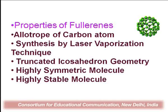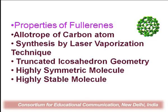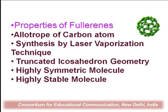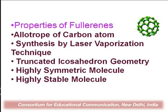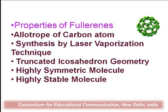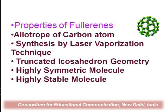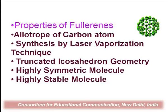What are the different properties of fullerenes? As we know, it is an allotrope of carbon and the most prominent allotrope of carbon, which exists in three dimensions — 0, 1, 2, and 3. Carbon is a very unique element in the periodic table whose allotropes span three dimensions (0, 1, 2, 3). It is synthesized by the laser vaporization technique and has truncated icosahedral symmetry.